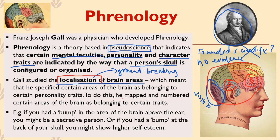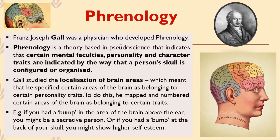Phrenology does involve a form of brain mapping — numbering certain parts of the brain. For example, Gall thought a bump at the back of your skull meant higher self-esteem, or a bump on the top of your head meant you were a kinder person. We know that's not based in evidence, but the idea of localization of brain areas is something we still depend on today for our understanding of the brain. So there's some good and some bad in this theory.